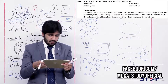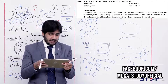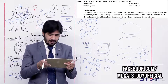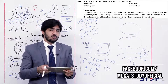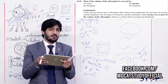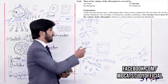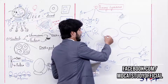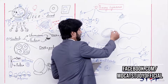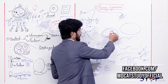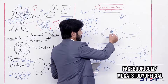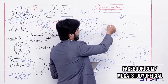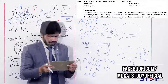Question 46: Most of the volume of the chloroplasts is covered by (alpha) grana, (beta) intergrana, (charlie) stroma, (delta) thylakoid. Within the chloroplast, there is an outer membrane and inner membrane. Inside the inner membrane, the thylakoid membrane is present, and the remaining large part is the stroma. Most of the volume is occupied by the stroma. So the right answer is charlie — stroma.